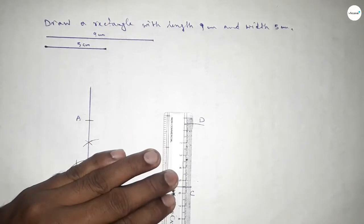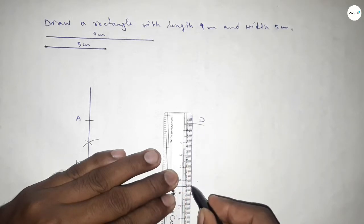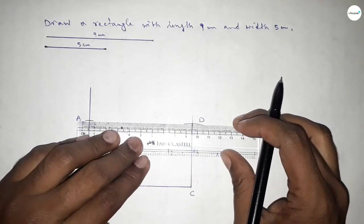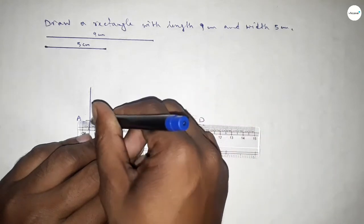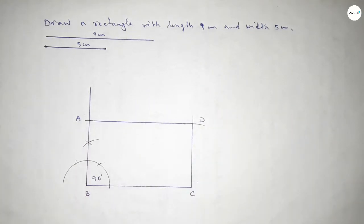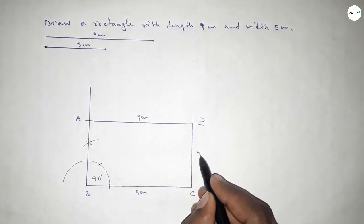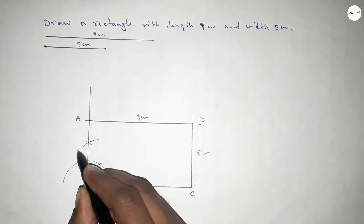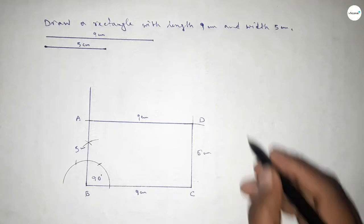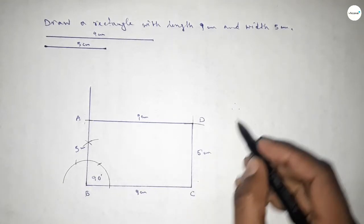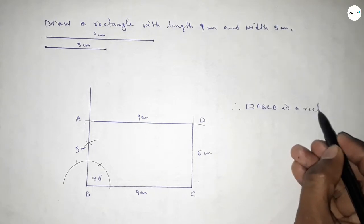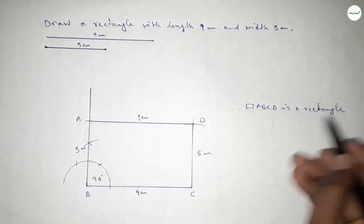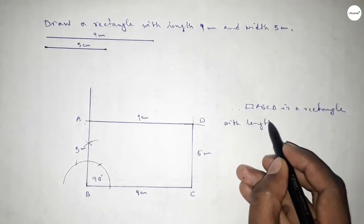Joining A to C and D, then joining A and D to complete rectangle ABCD. This side is 9 centimeter, this side also 9 centimeter, this side 5 centimeter, and this side also 5 centimeter. Therefore, rectangle ABCD is a rectangle with length 9 centimeter and breadth or width 5 centimeter.